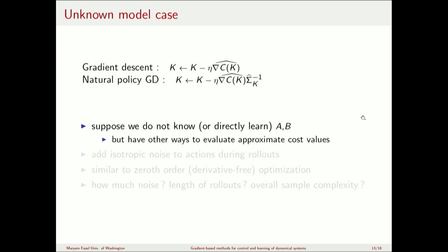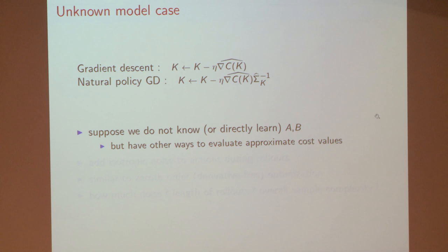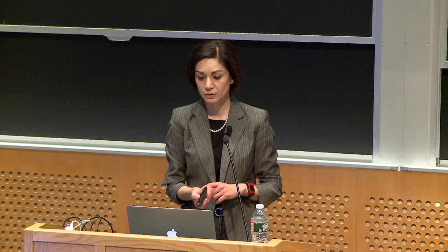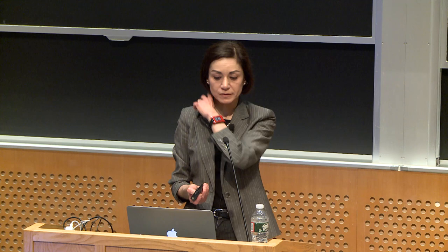Now, suppose your A and B matrices are not known, so you don't know the model, and you have only an approximate oracle for the gradient — you cannot have an exact gradient but you have an estimate of it. Your algorithms would then use an estimated gradient in gradient descent; for natural policy gradient you would also have to estimate the state covariance matrix. This would be useful for cases where we have other ways of evaluating approximate gradients and trajectory covariances.